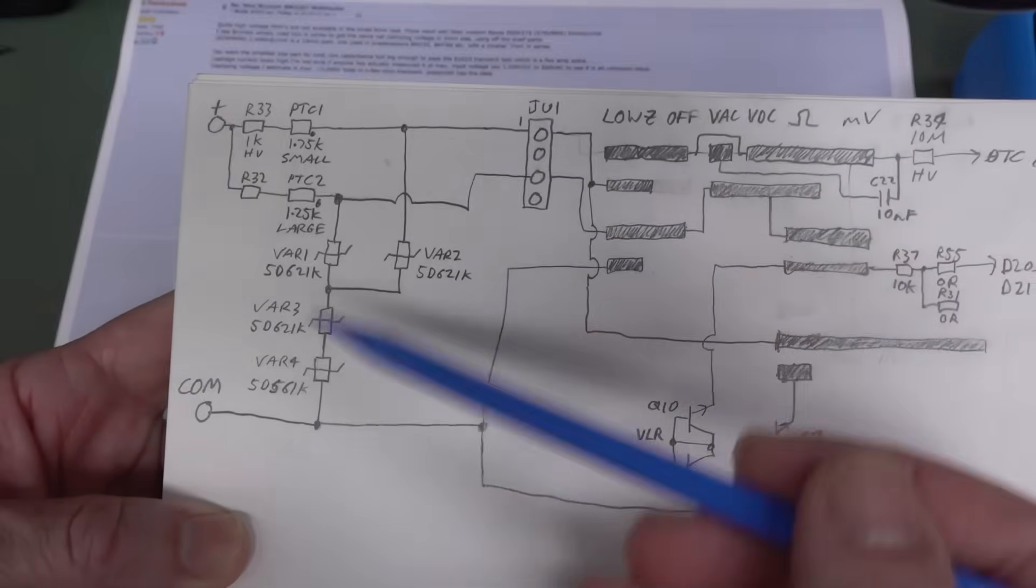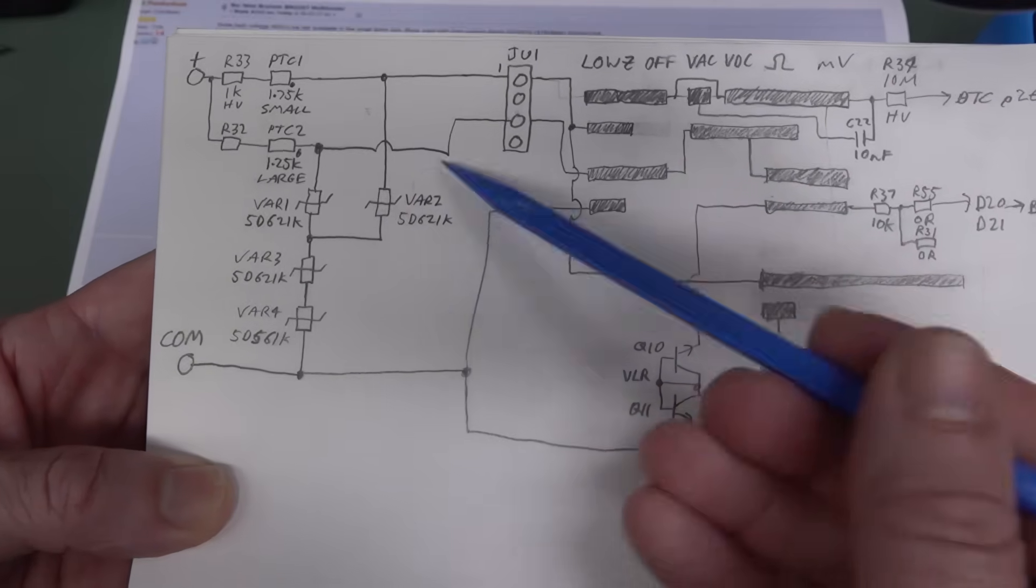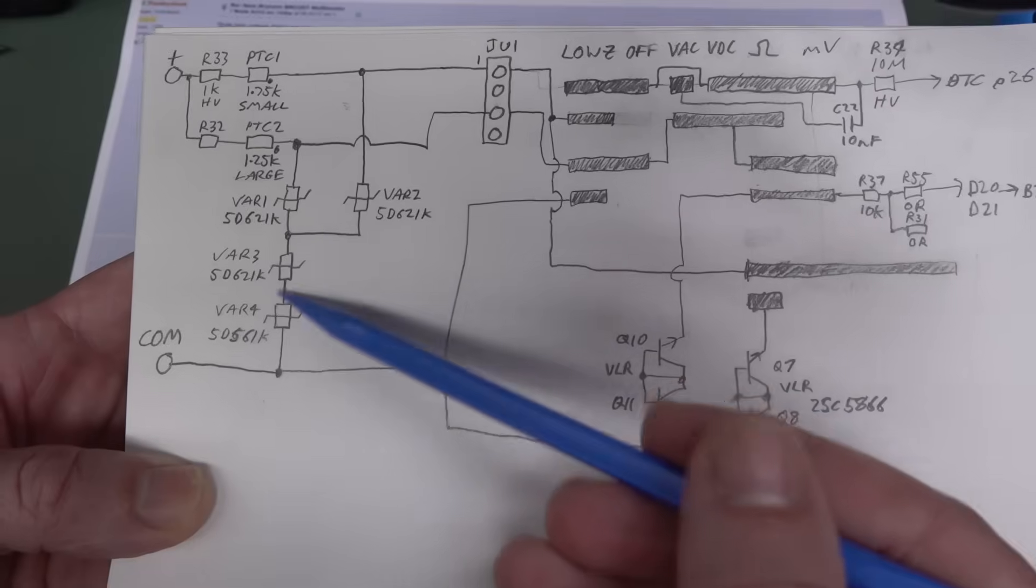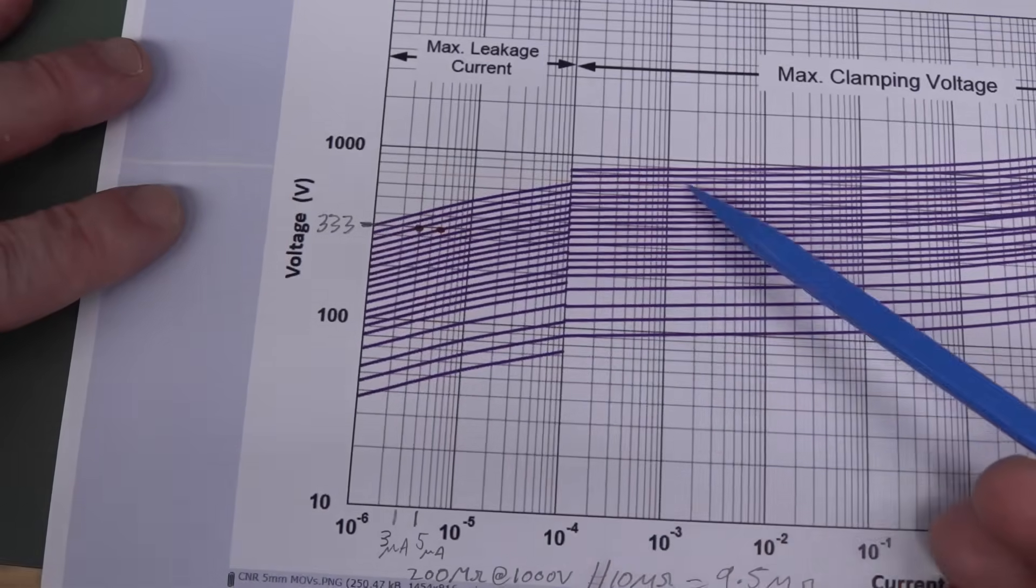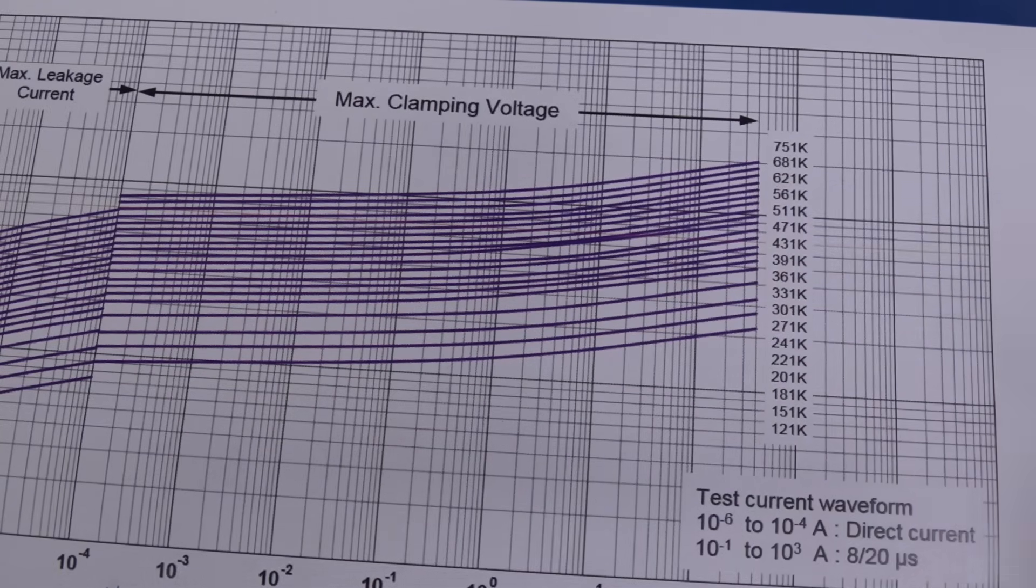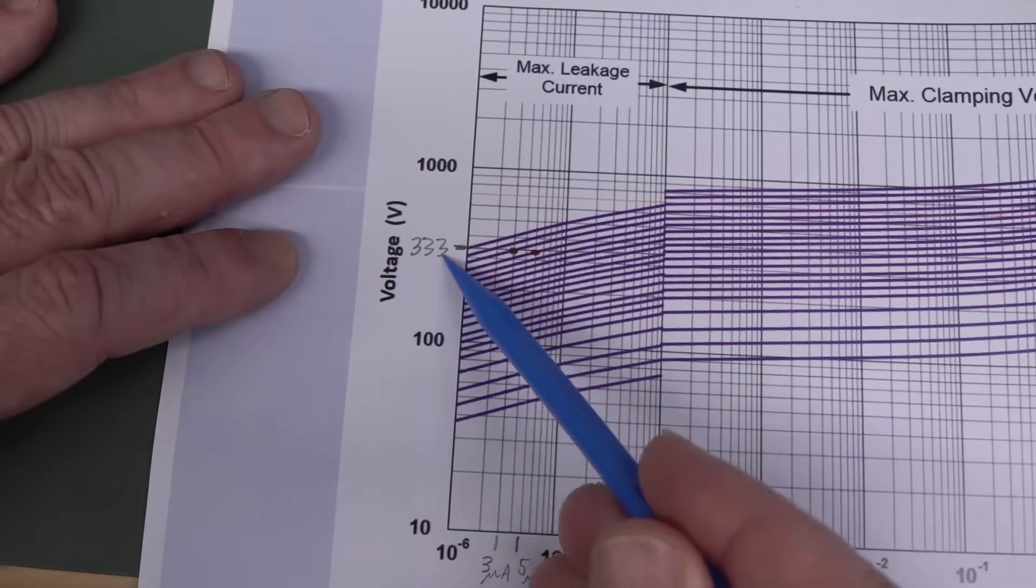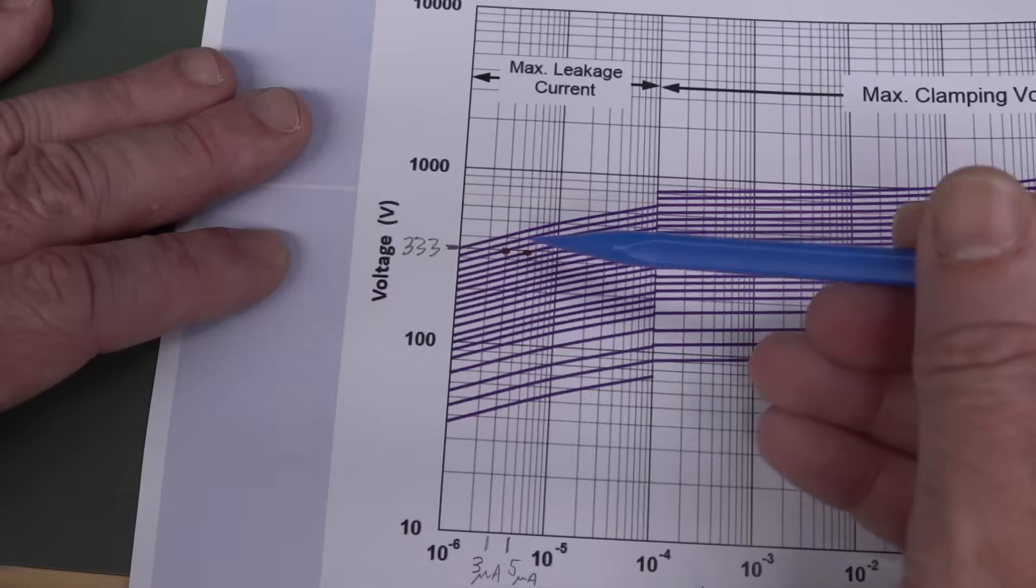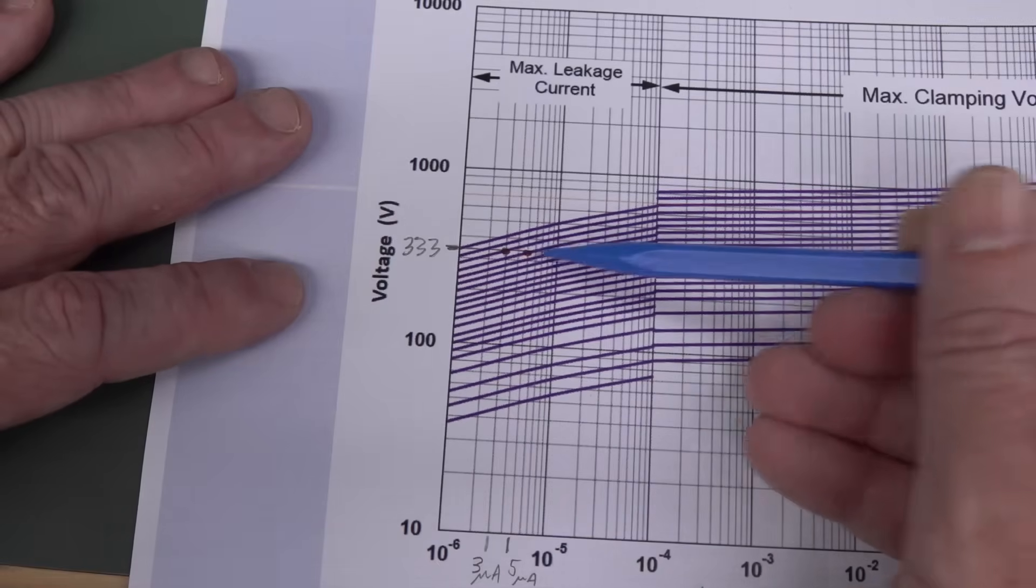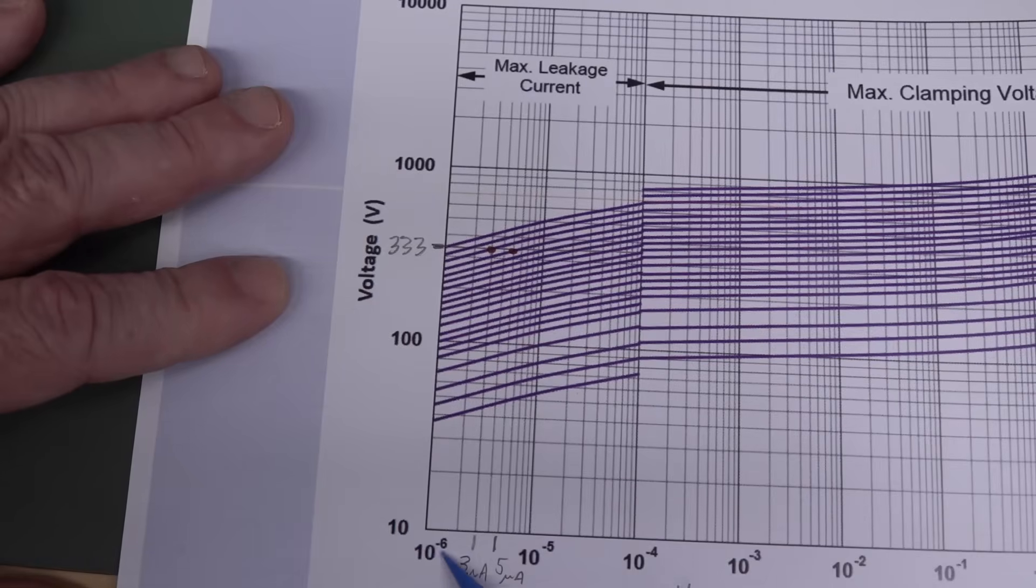So this is how much current it'll actually clamp through. And over here is what we're interested in. This is the leakage current. Now, because we have them in series like this, if we put 1,000 volts here, we're pretty much going to have an even voltage split across here. We're not 100% sure, but let's just assume it's an even voltage split. So 333 volts per MOV here. So if we go to our leakage current graph here, these are the characteristic curves for the different models. So we're looking at the third one down, the 621K and the fourth one down, the 561 here.